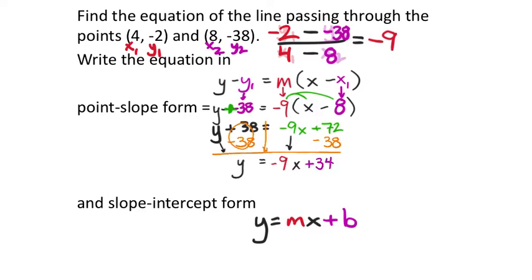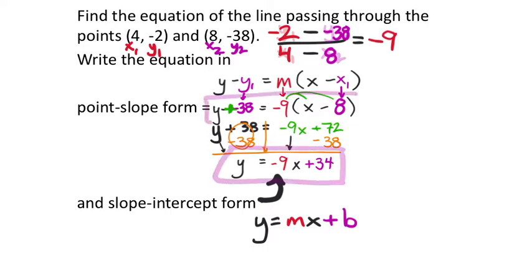Now that I have this in slope-intercept form, if we were to graph this, we have the y-intercept and the slope, and you could graph it if you wanted to. On the assignment, this will want both answers — it wants the point-slope form answer and the slope-intercept form answer.